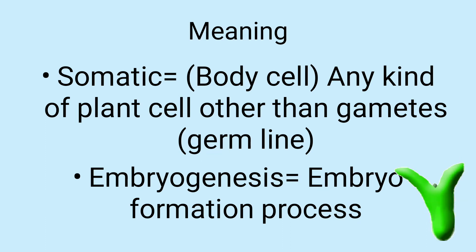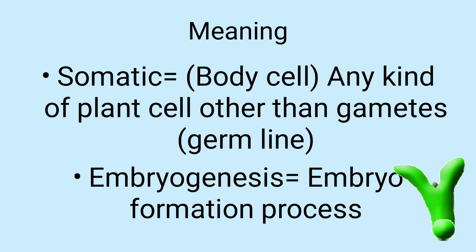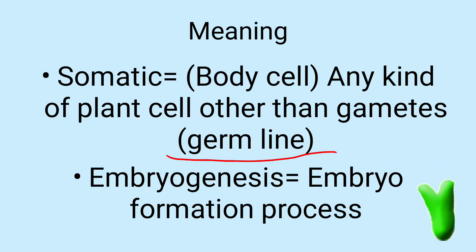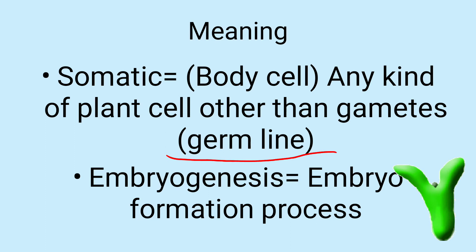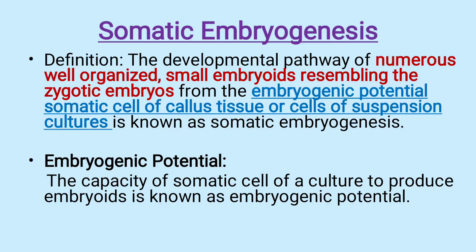Now, the meaning of somatic embryogenesis: 'somatic' means body cells — any kind of plant cells other than gametes is called somatic, whereas gamete cells are called germ lines. 'Embryogenesis' means the process of embryo formation. So somatic embryogenesis means the formation of an embryo from any kind of plant cell other than gametes.